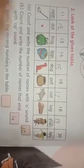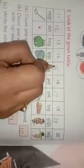What we do? Write the missing number in the table. Missing number. One, two, three, and four are missing numbers. So we write here number four.